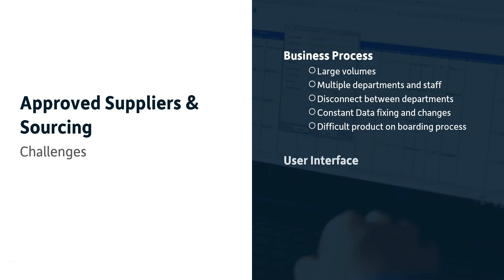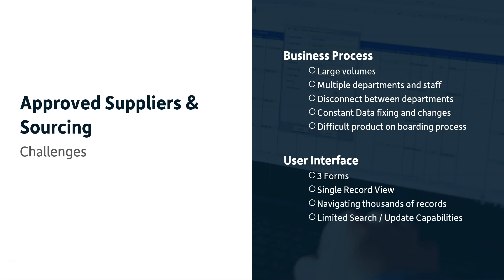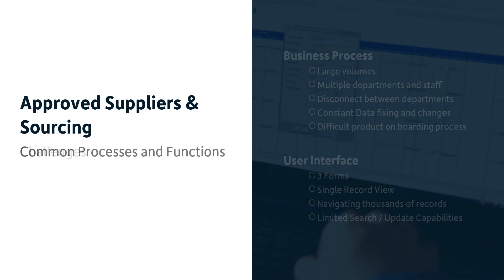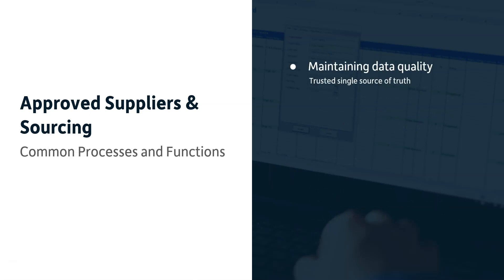This user interface will get your approved suppliers and sourcing sorted out. There are three different user forms to navigate, plus lower level areas. For approved supplier lists, there are up to five sections to deal with, no easy way to view data, only a single record view, and you have to navigate through thousands of records with very limited search and update capabilities.